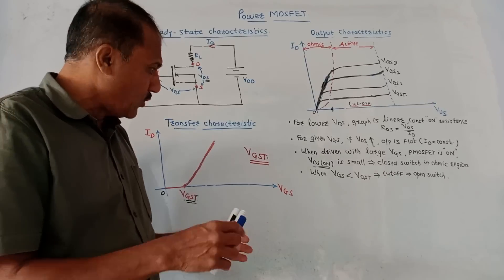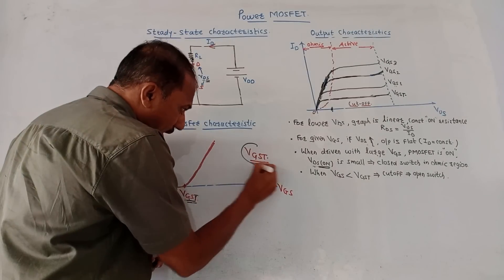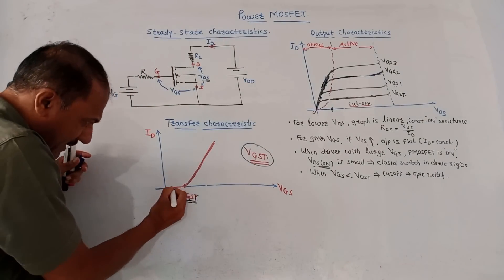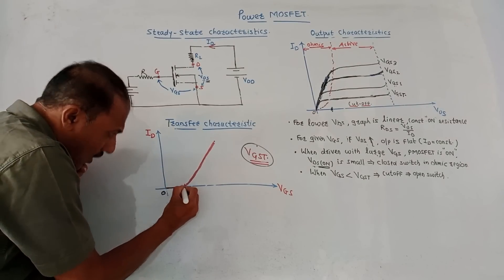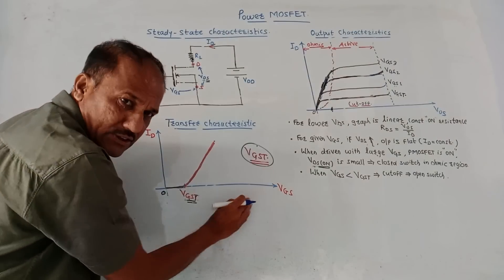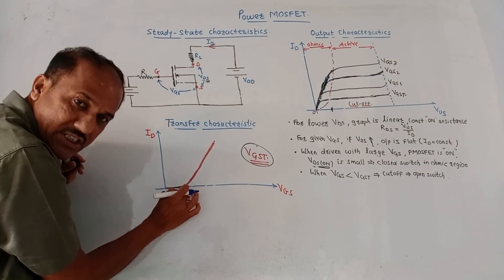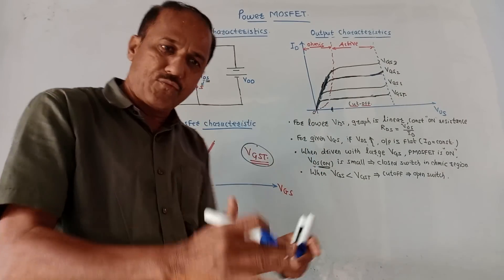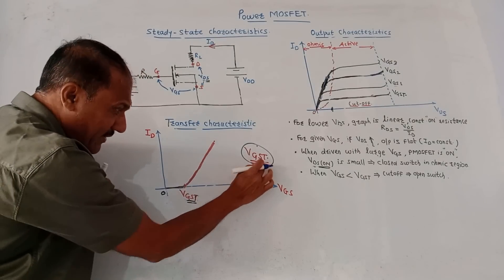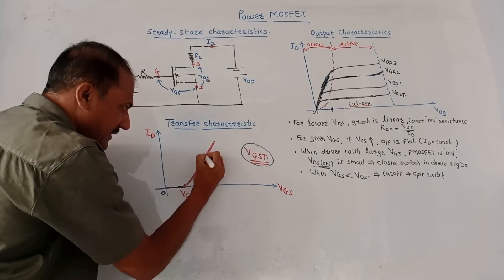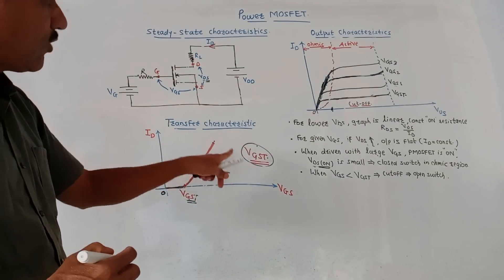There is one typical value called VGST. If the value of VGS is less than VGST, the drain current ID is zero — the MOSFET is in cut-off condition. Once the value of VGS becomes more than VGST, the graph increases linearly. This is the transfer characteristic of the MOSFET.